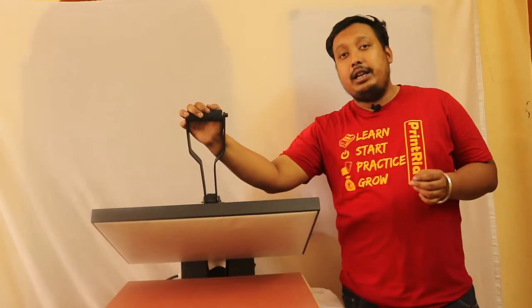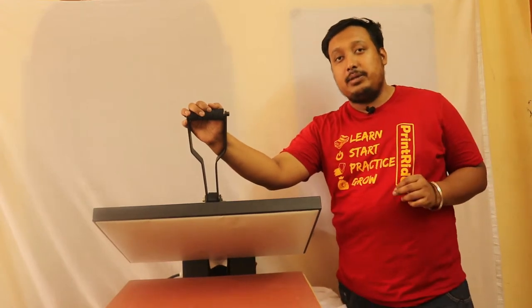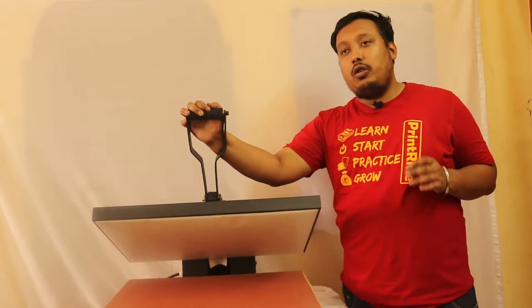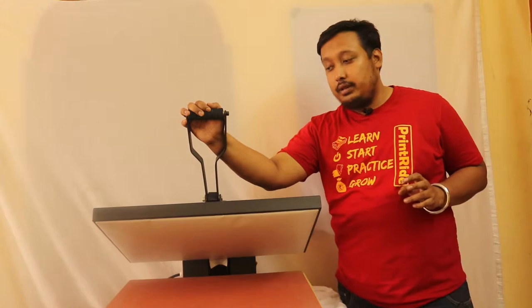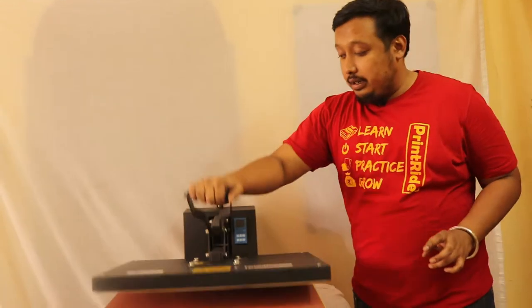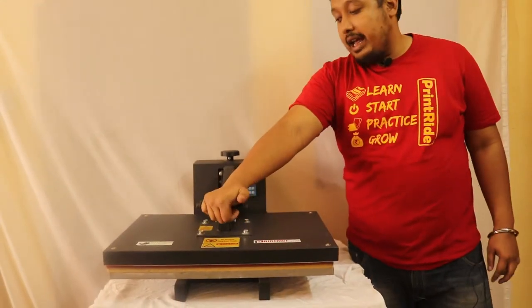This is 16 by 24 inches heat press machine. You can do almost one t-shirt here. This machine is heavy duty with a heavy clamp shell.